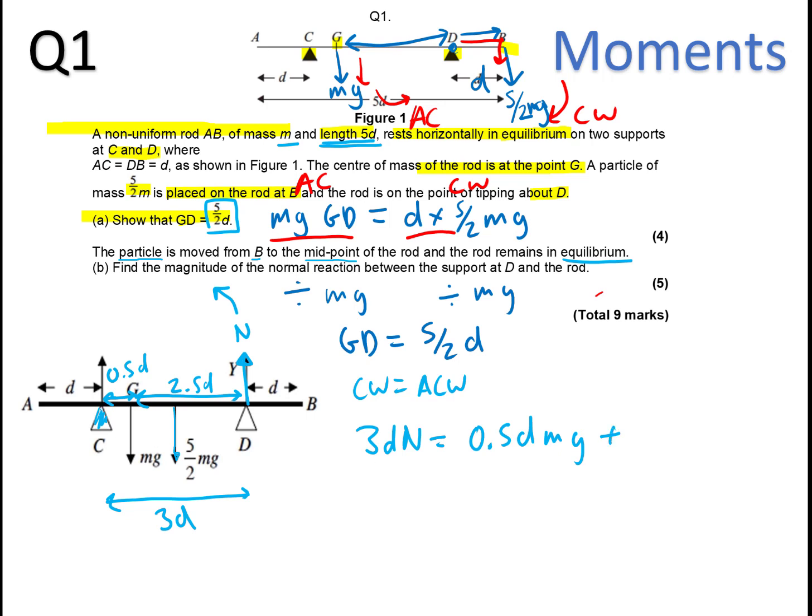Now it's plus, we've got this weight B, or particle B, that's moved to the midpoint. So if this is 3D, the midpoint of that is going to be 1.5D, this is going to be plus 1.5D times 5/2MG. Now, can you see these are all like terms? So if we multiply this out and combine them, that's going to make 17/4 MgD, which equals 3DN. And we're trying to find this normal reaction here. So we divide out by 3D. You can see that N will equal 17/12 Mg. And that will be the answer for 5 out of 5 marks.